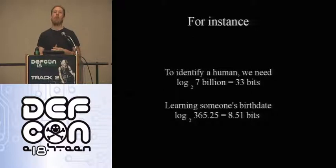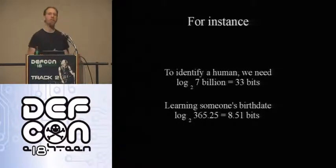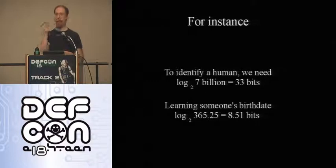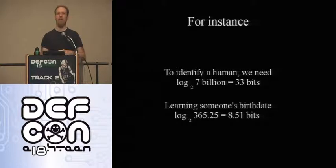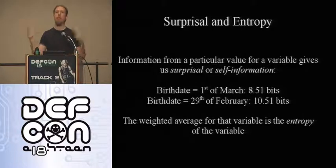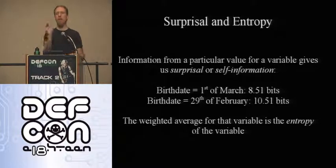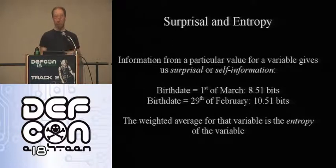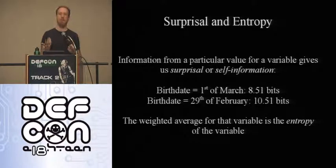On the face of the planet Earth, with 7 billion people, you need about 33 bits to identify one person. If you learn someone's birth date — what day of the year they were born — you learn about 8.51 bits. So if you learn that my birth date is the 1st of March, you've learned 8.51 bits about my identity.